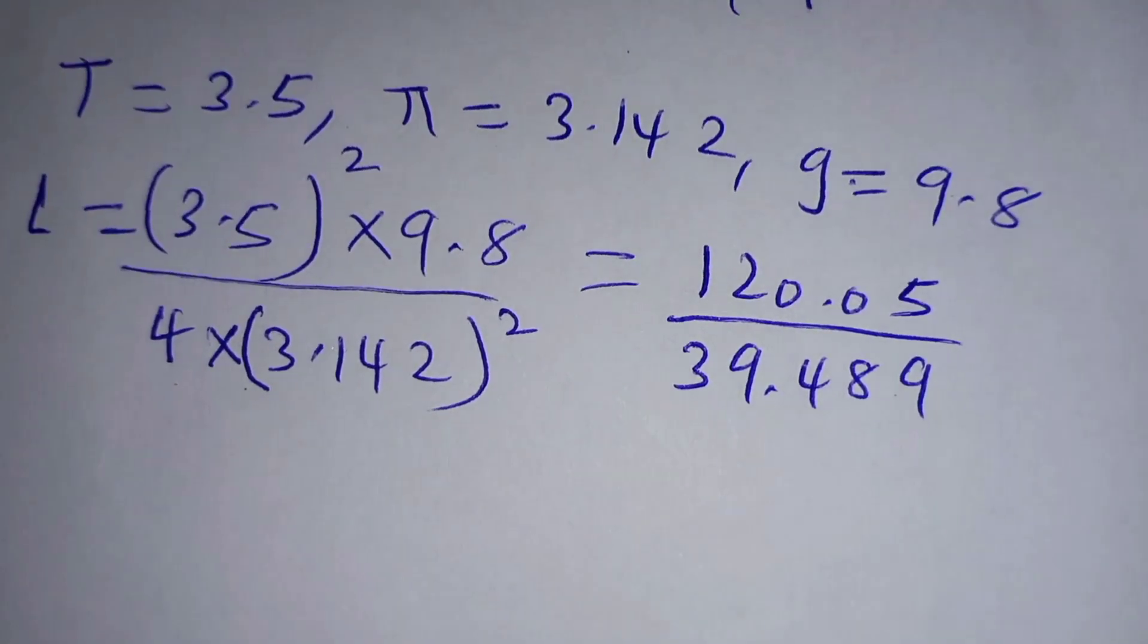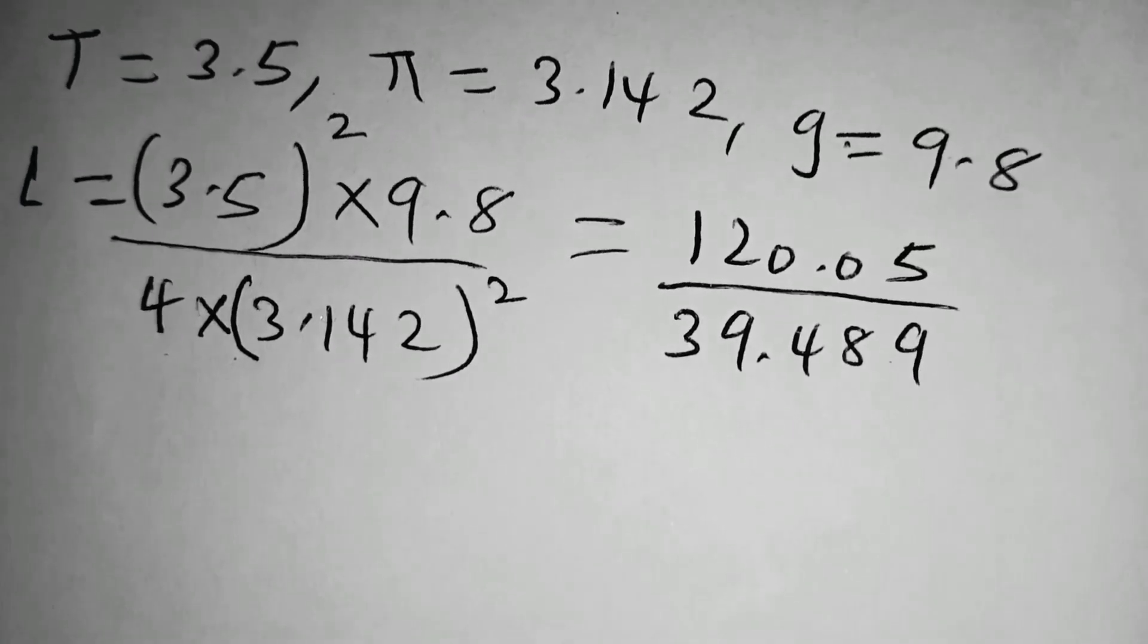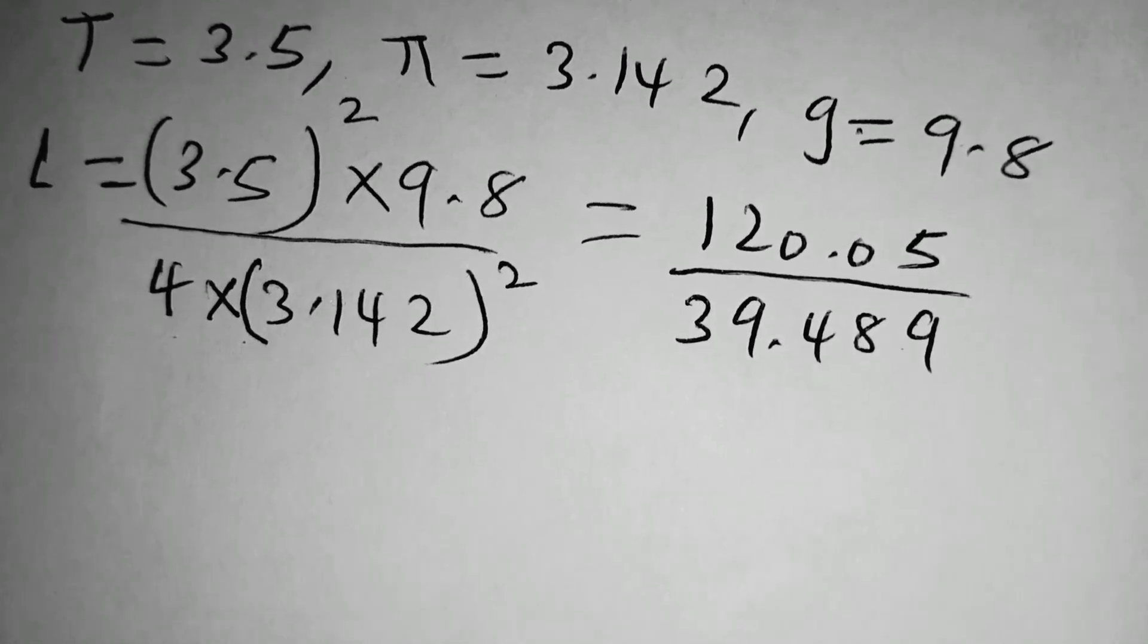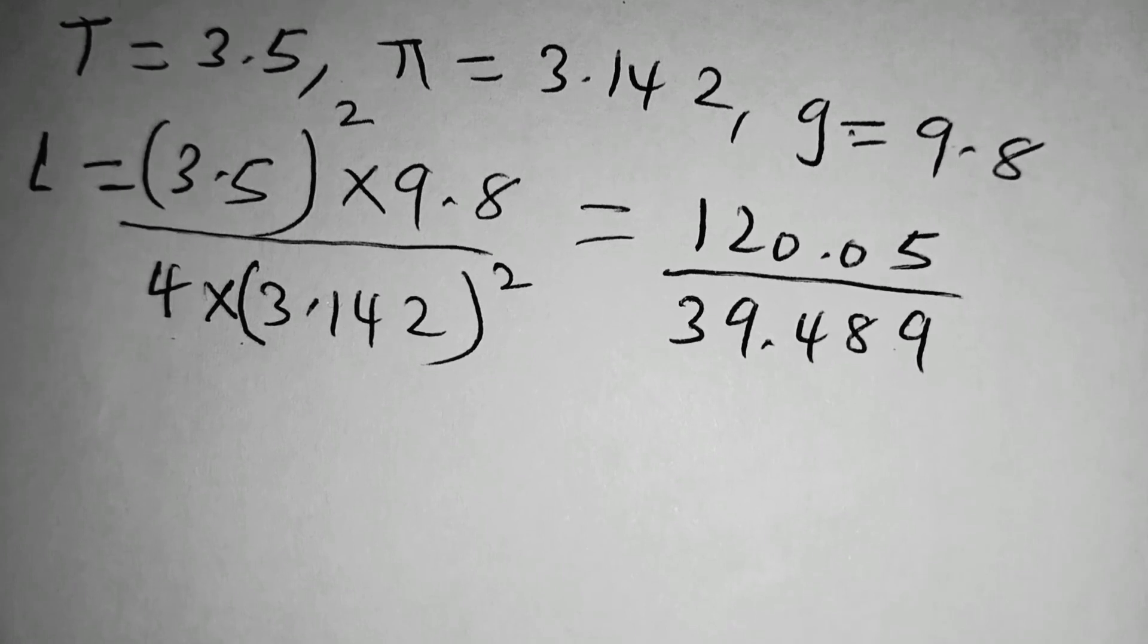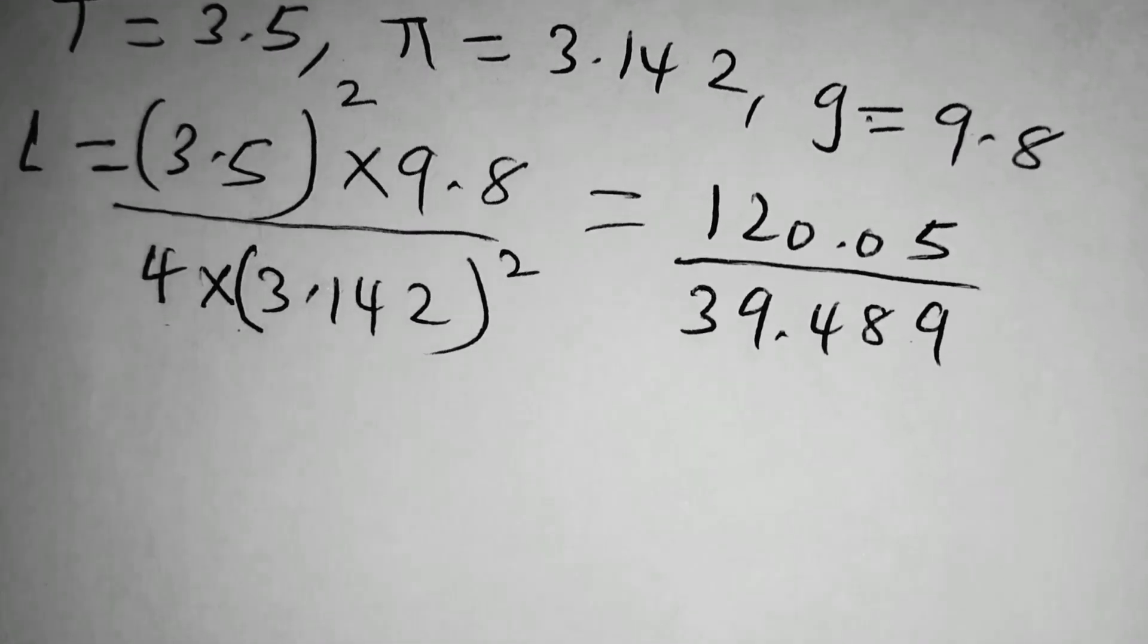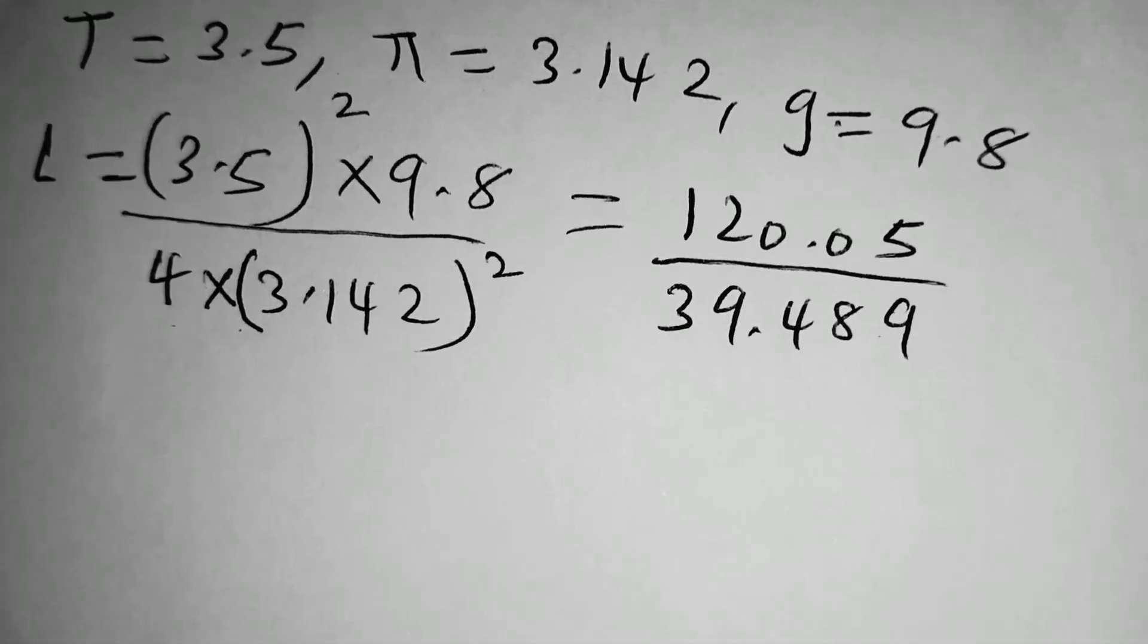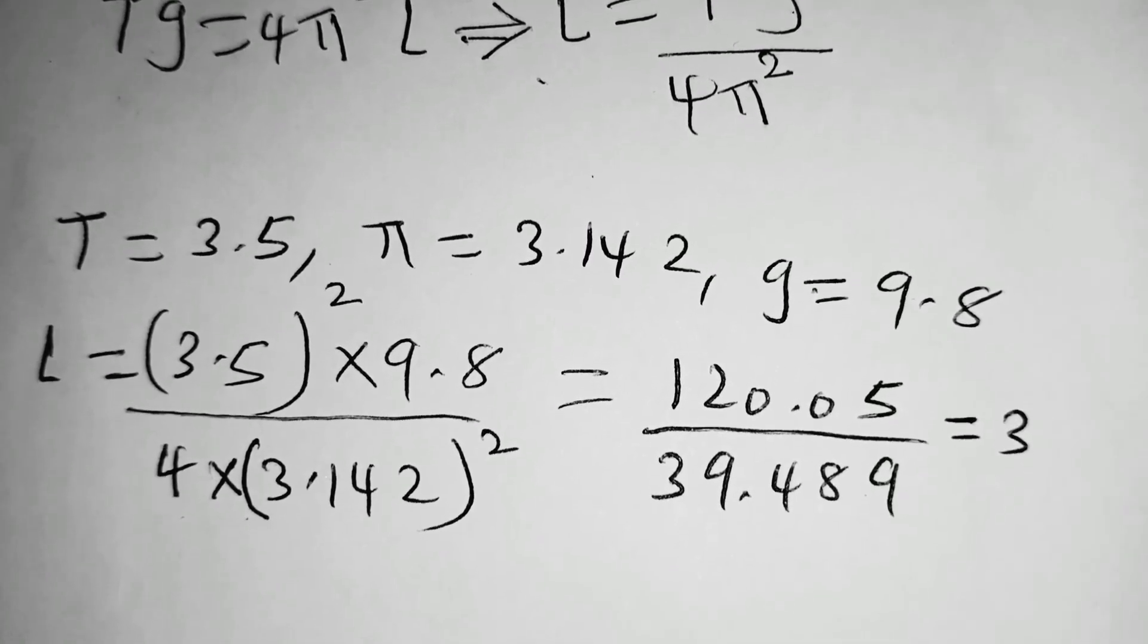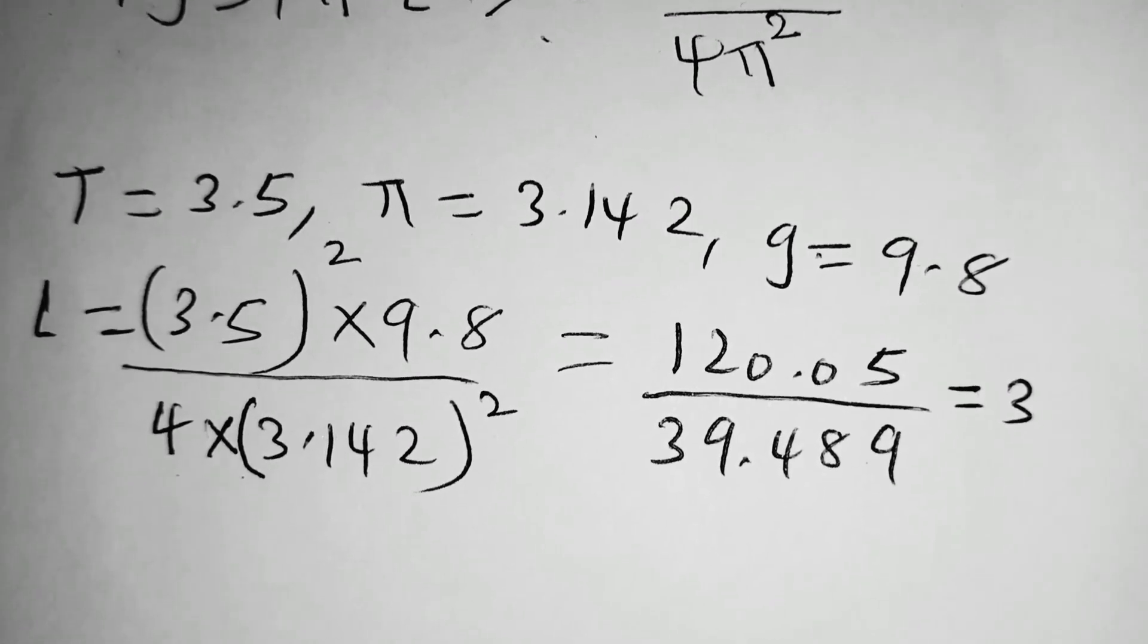When you multiply, you get 120.05 divided by 39.489, which simplifies to 3 to 1 significant figure.